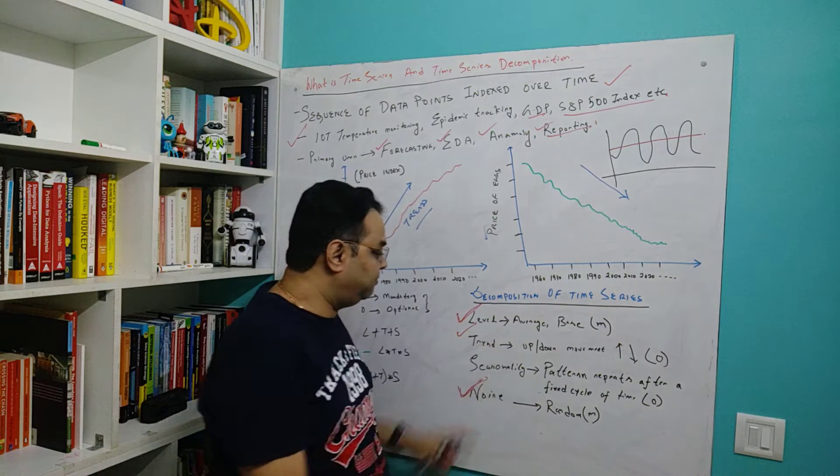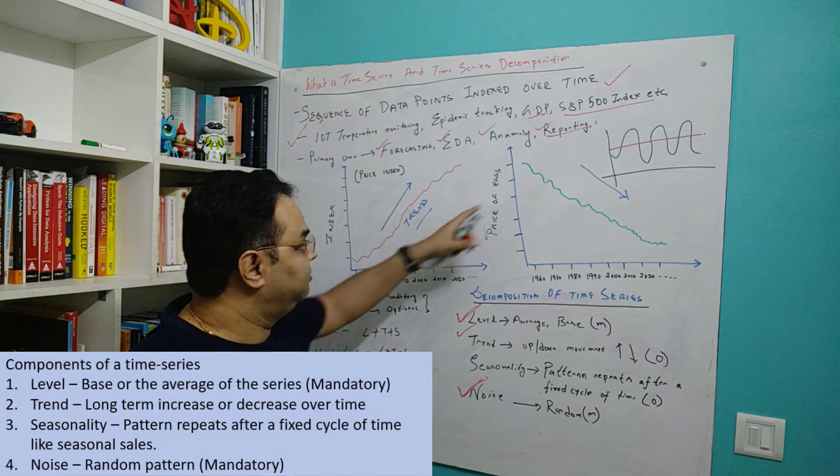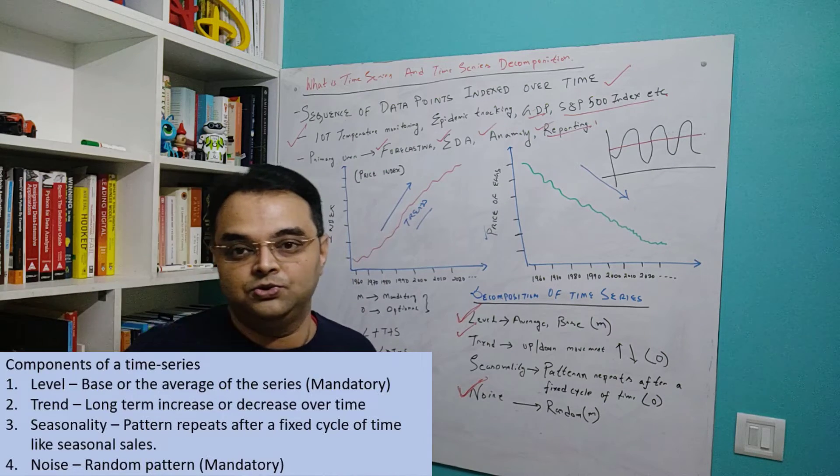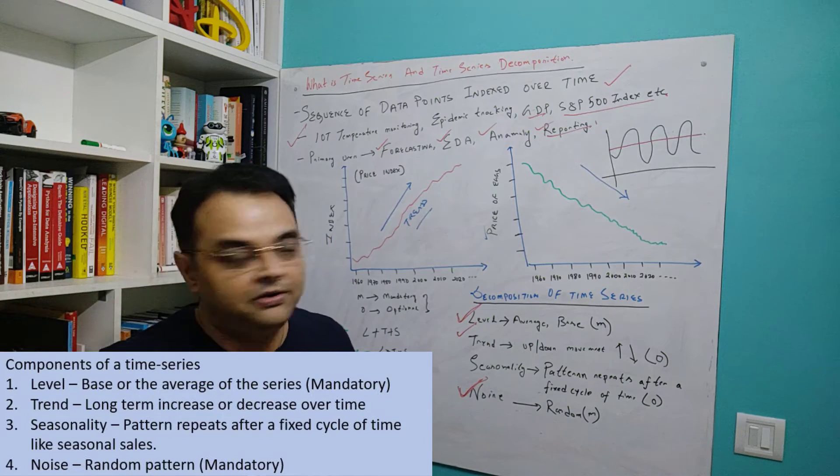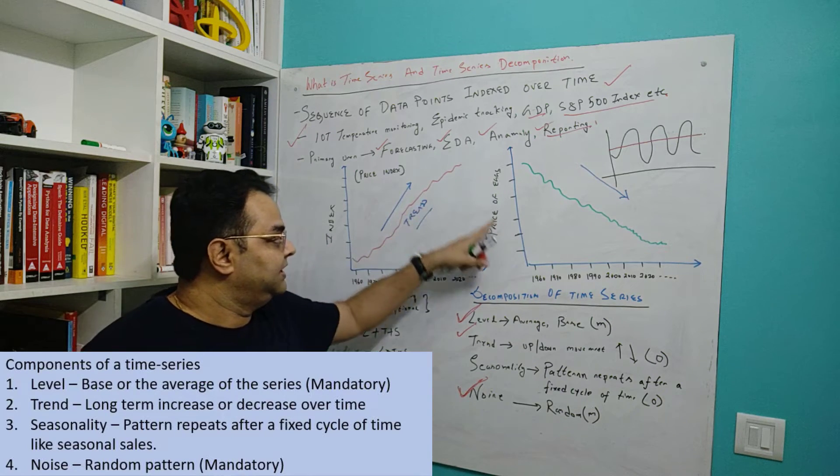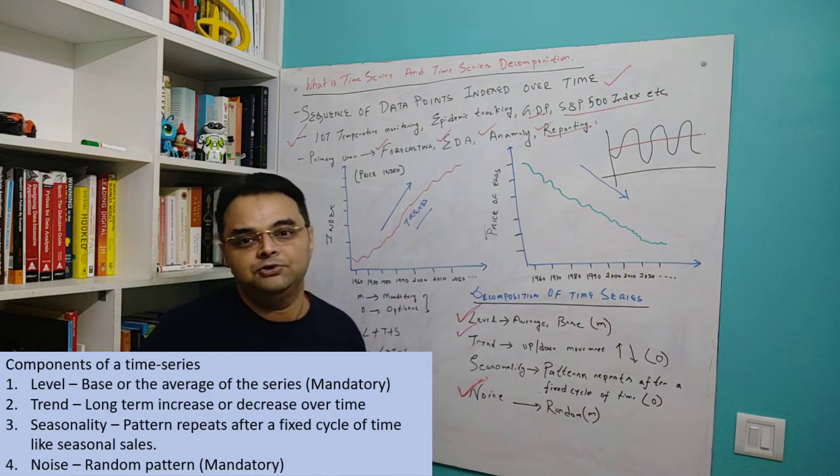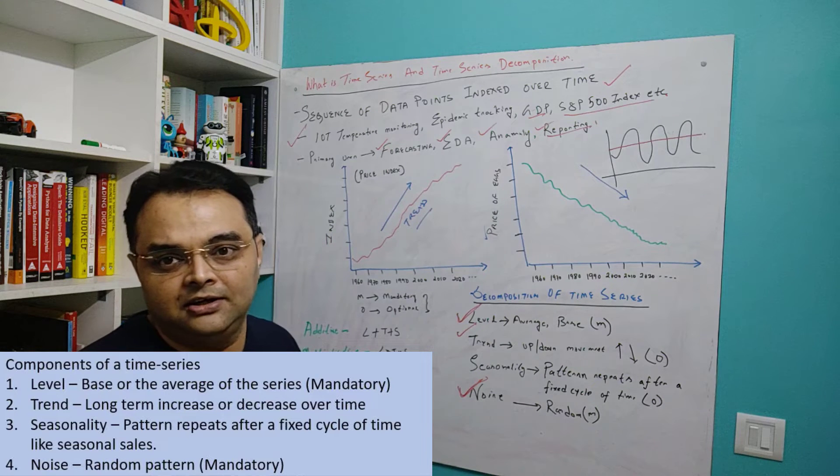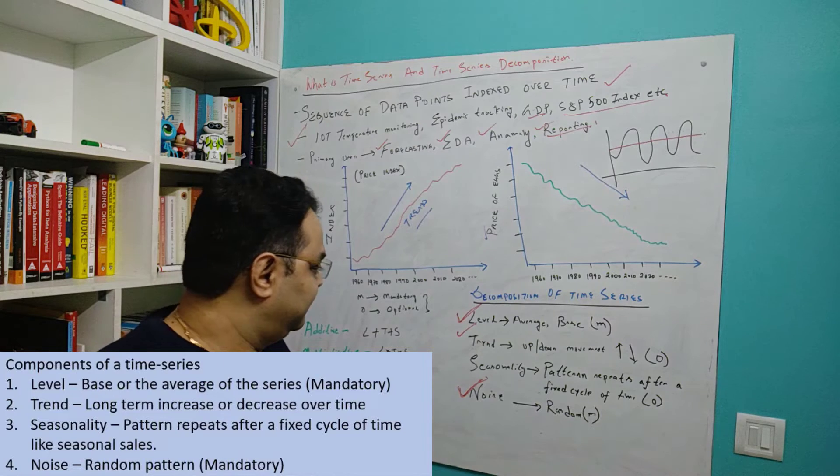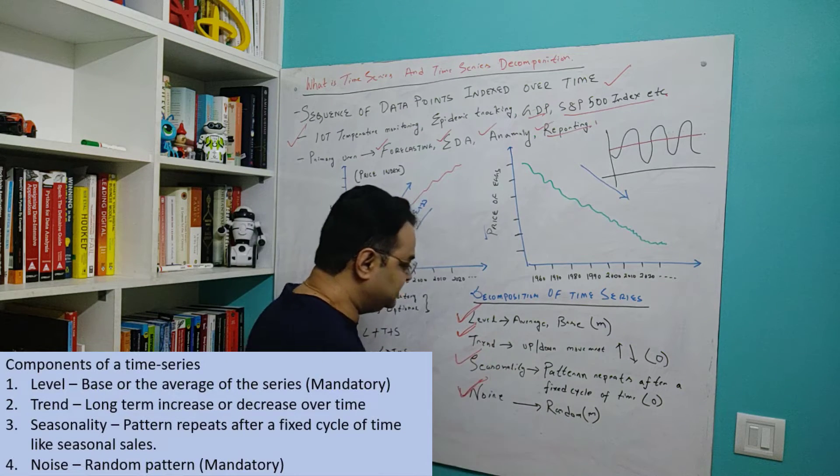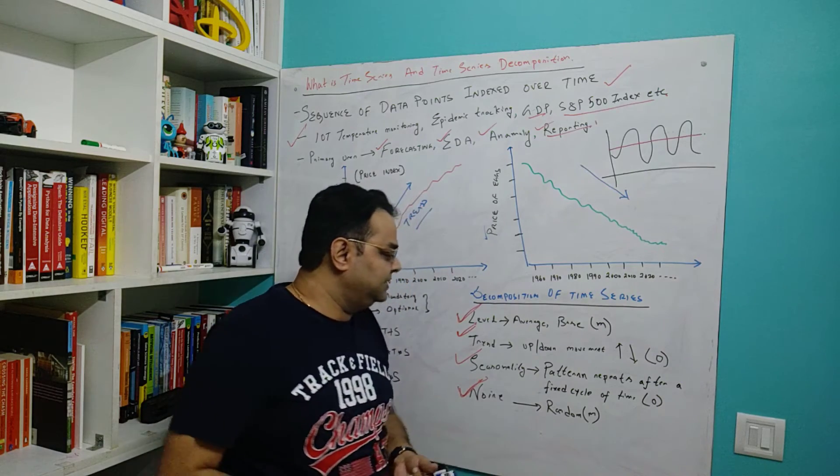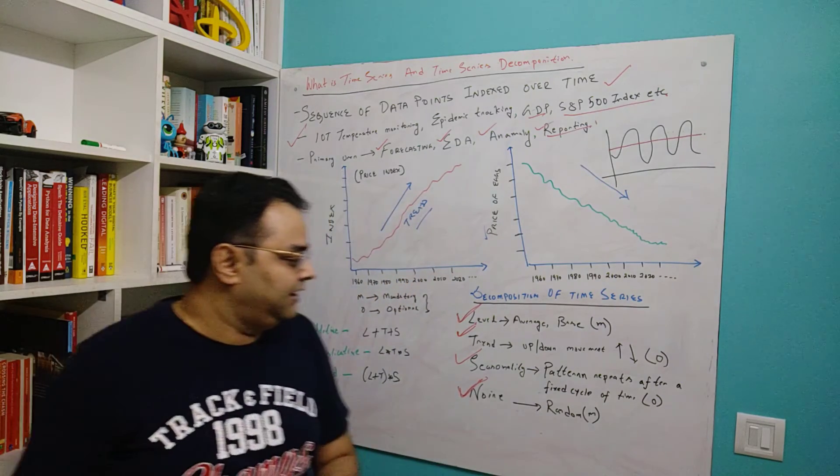There are two optional components. One is trend, and this is the upward and downward movement which I was talking about. If your time series shows an upward trend or a downward trend - example here, the index is growing upward as you can see, and the price of eggs is reducing every decade - so these are examples of upward and downward trend respectively.